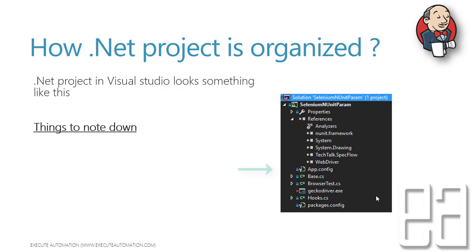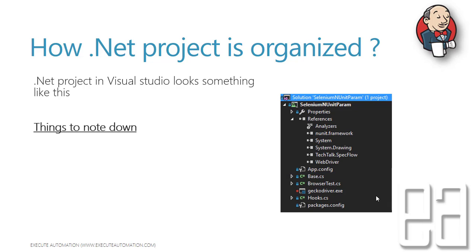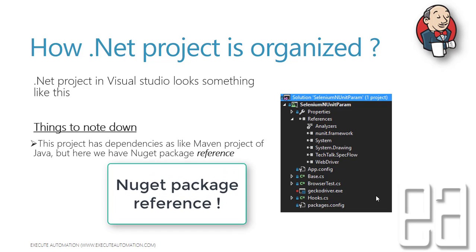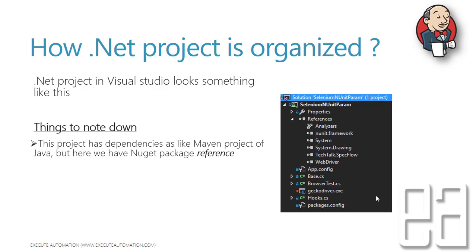Under the project you can see properties, references with DLL files, an app.config file, a class file, some exe files, a Gecko driver, and a config file. This project has dependencies similar to a Maven project in Java, but here we have a NuGet package reference. In Java, all references are in the pom.xml file, whereas in NuGet the references sit under the 'References' section and can be added via project reference, assembly, COM, or the NuGet package manager.